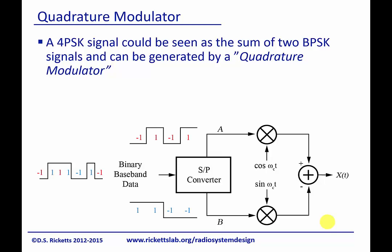A 4PSK signal could be seen as the sum of two BPSK signals and can be generated by a quadrature modulator like we saw last time. So here's one BPSK signal,